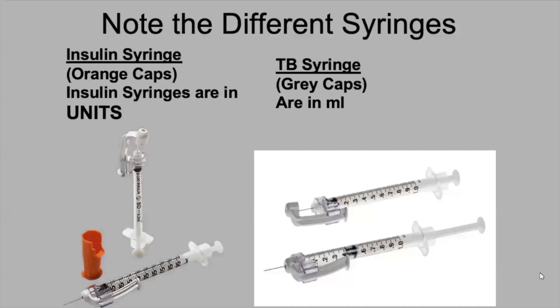These are two different types of syringes for sub-Q injections. On one side you have an orange cap — orange typically signifies insulin. The key difference with insulin syringes is that they are measured in units, not milliliters. The orange syringe shown goes up to 50 units. The TB syringe, typically with a gray or brown cap, is measured in milliliters — up to one milliliter. Insulin is in units; TB syringes are in milliliters. It's important to know the difference.